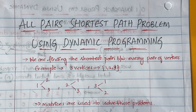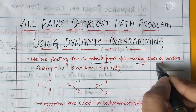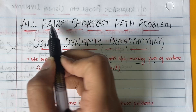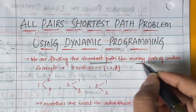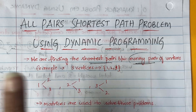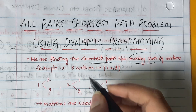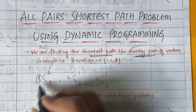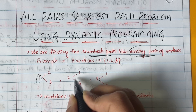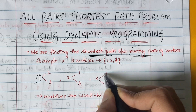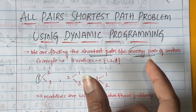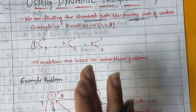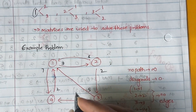What we are doing is finding the shortest path between every pair of vertices. As the name says, All Pairs Shortest Path means between every pair of vertices we are finding the shortest path. For example, with three vertices 1, 2, 3 — from 1 to 2, 1 to 3, 2 to 1, 2 to 3 — whichever path has minimum cost, we come up with that path. We use matrices to solve these problems.